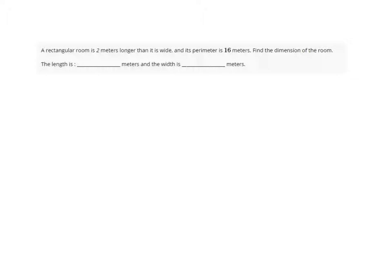So first we have to recall that our perimeter formula is 2L, 2 times the length, plus 2W, which is 2 times the width. And it's telling us here that our perimeter is 16 meters. So we're going to put a 16 in here.